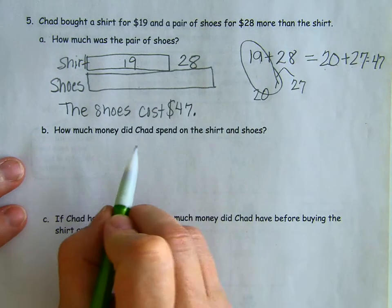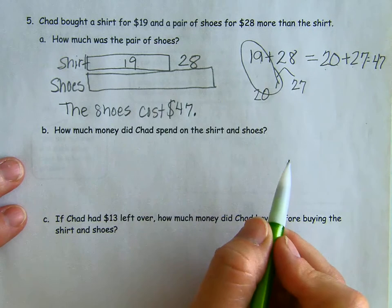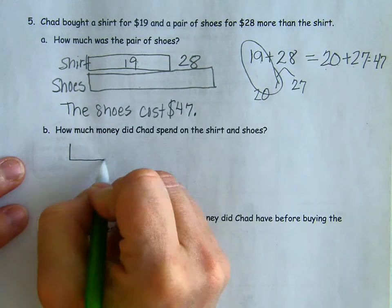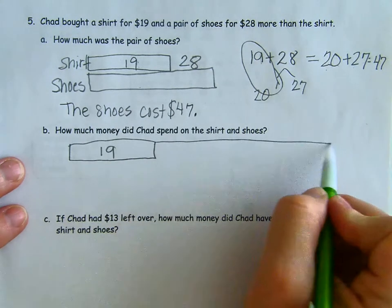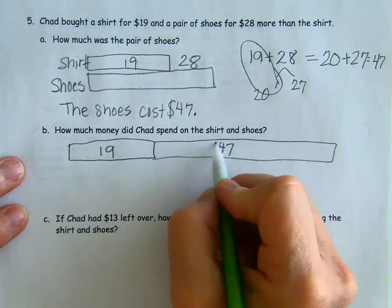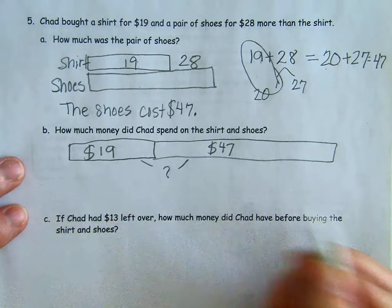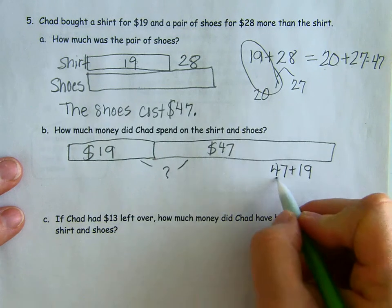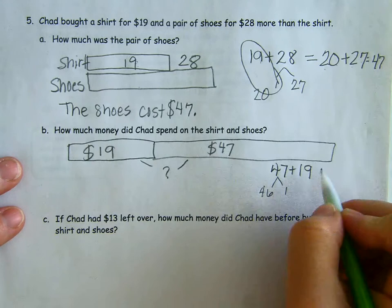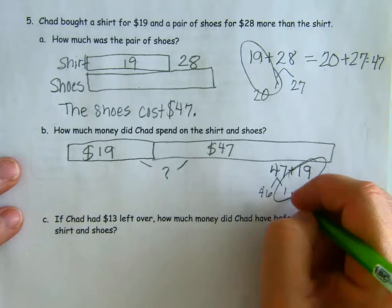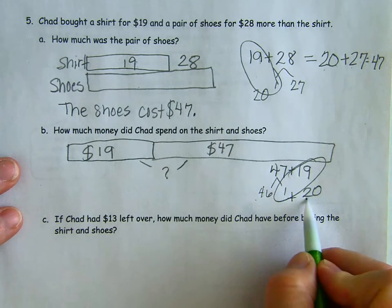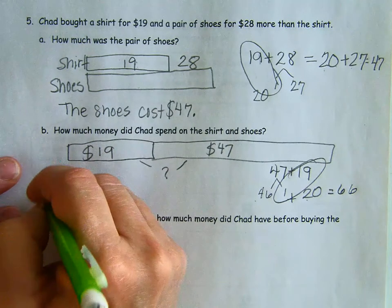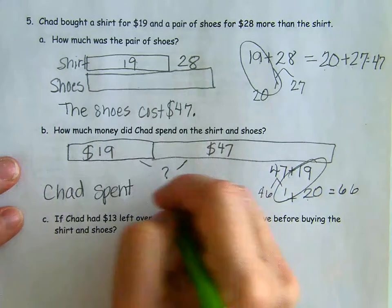Now, how much money did Chad spend on the shirt and shoes? Now we're not adding those parts. Now we're adding the shirt, which is $19, and the shoes, which are $47. We want to know the total. So we're adding $47 plus $19, and again we're going to just take 1 out of here. So $46 plus $20. 4 tens plus 2 tens and $6 plus $0. Chad spent $66.